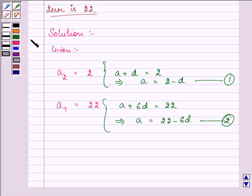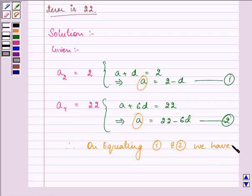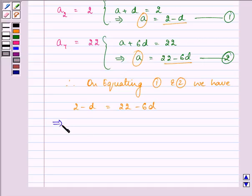Since the first term of an AP is same for both the cases, therefore, on equating equations 1 and 2 we have 2 minus D equal to 22 minus 6D which implies 2 minus 22 is equal to minus 6D plus D, which further implies minus 20 is equal to minus 5D and the value of D comes out to be 4.